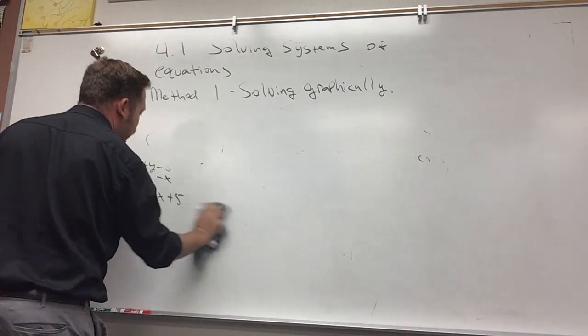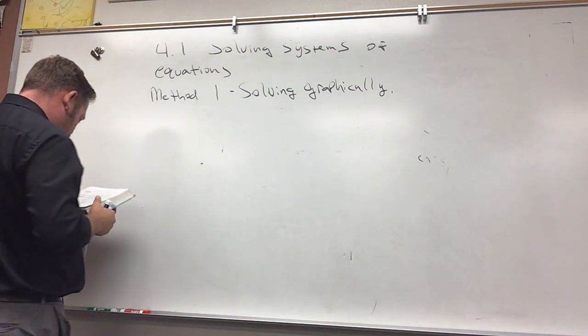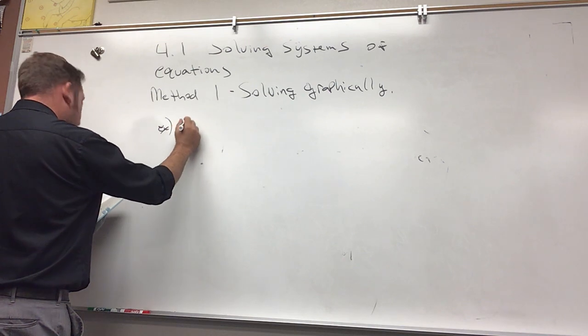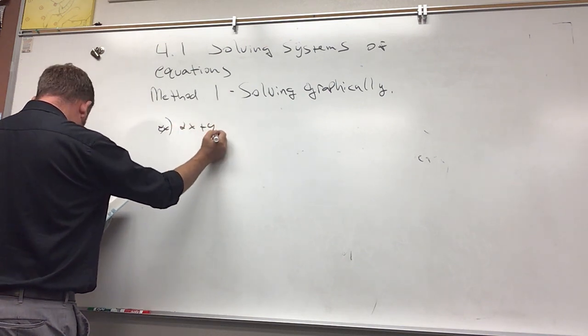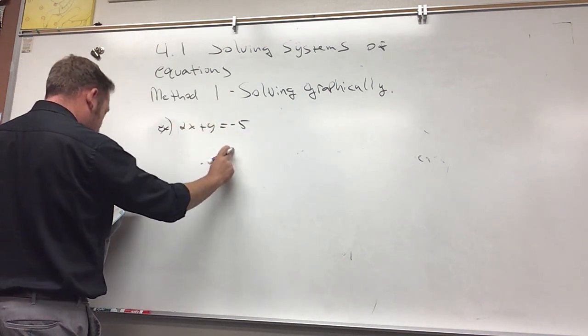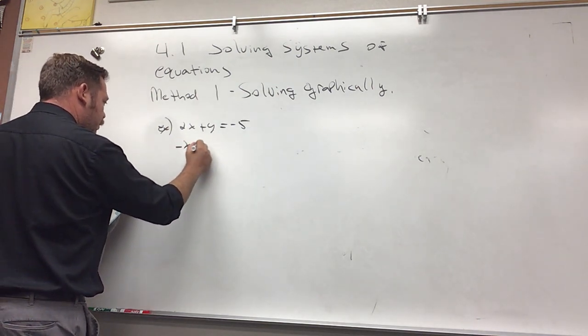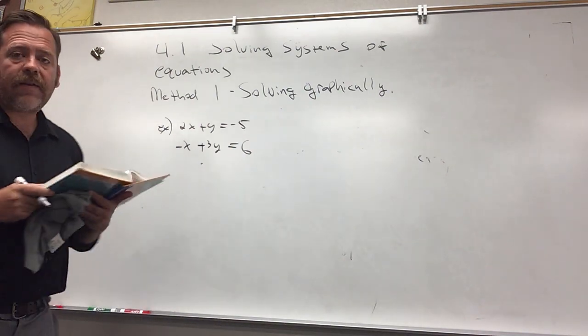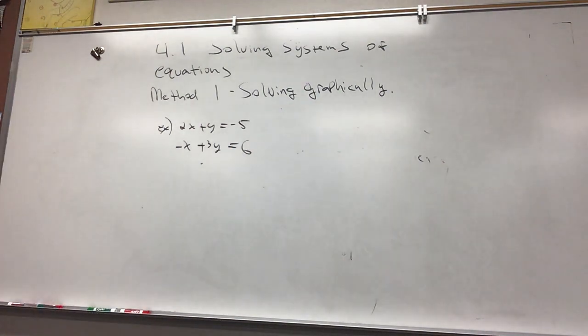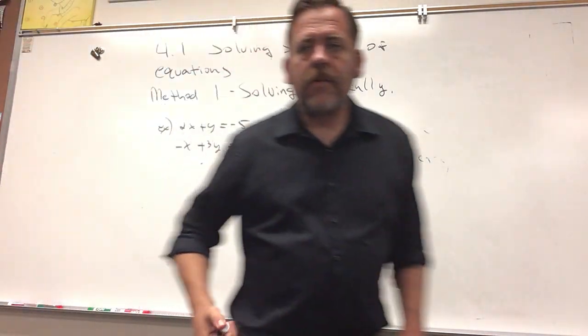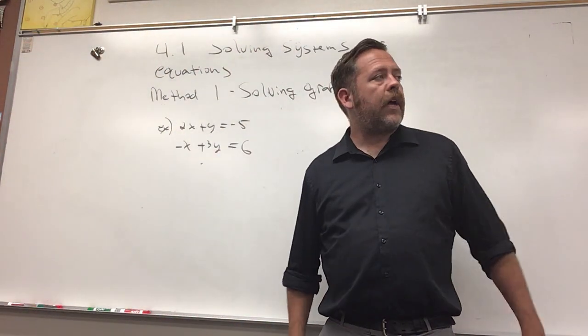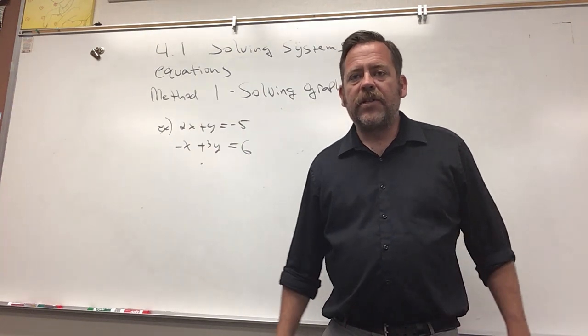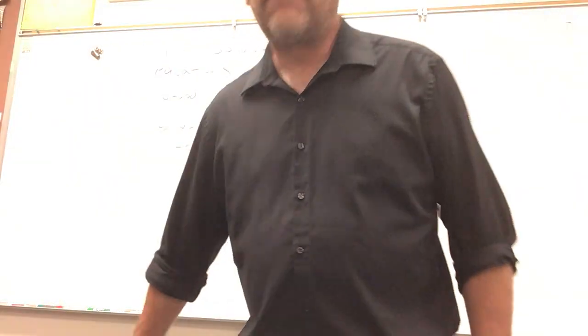You have to be very precise when graphing. If you have graph paper it helps. Let's have you try 2x plus y equals negative 5, negative x plus 3y equals 6. Try to solve that with graphing. I'm going to let you have fun with that while you're working on it. I'm going to solve it on my main board and I'll have the solution. Let's see how many of you can get it.